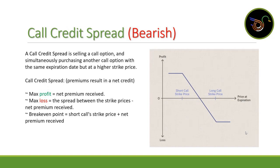The next one is the call credit spread, which is a bearish trade. A call credit spread involves selling a call option and purchasing another call option with the same expiration date but a higher strike price. This results in a net credit — you receive a credit when opening the contracts. Max profit is the net premium received. Max loss is the spread between the strike prices minus the premium received. Breakeven is the short call strike price plus the net premium received.